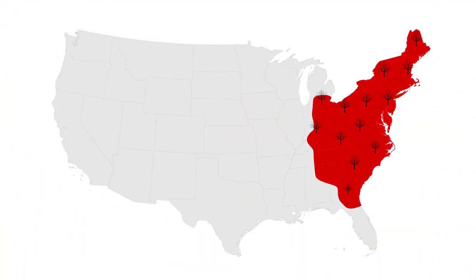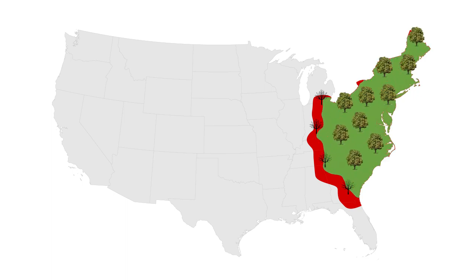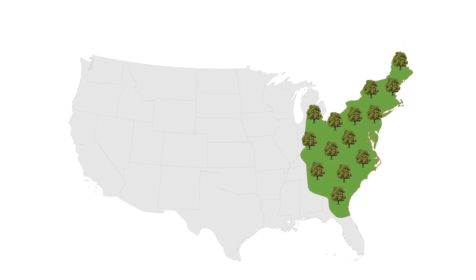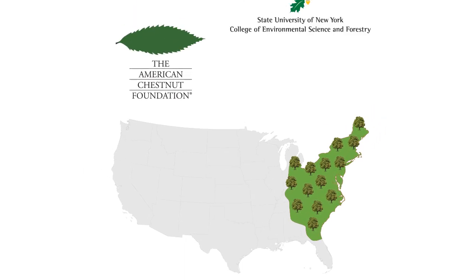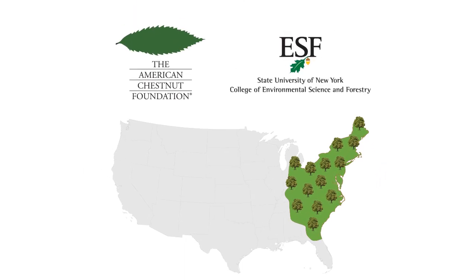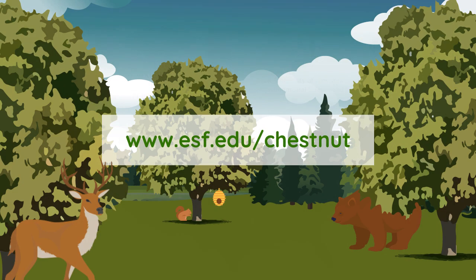Just as the blight originally spread outward from New York State, so can its remedy. The blight-tolerant American chestnut trees, with help from our collaborators — the American Chestnut Foundation and others — can extend the restoration efforts throughout the American chestnut's range, to help restore this magnificent tree and improve the health of our eastern forests.